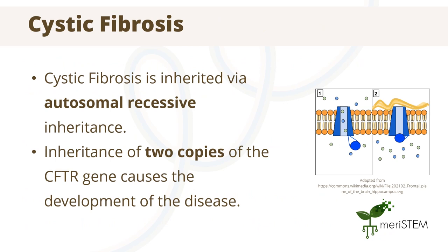An example of an autosomal recessive condition is cystic fibrosis. Cystic fibrosis occurs due to a faulty protein receptor which causes issues with moving salt and water across the cell membrane. This condition occurs due to the inheritance of two copies of the CFTR gene.